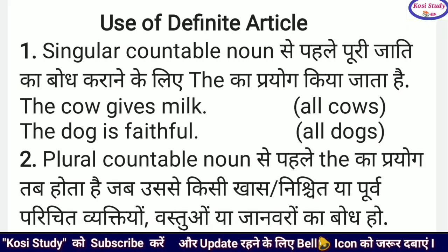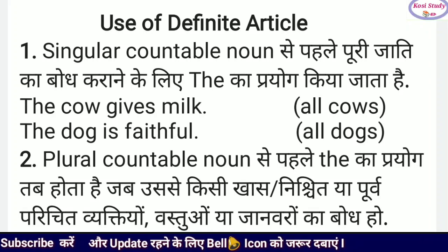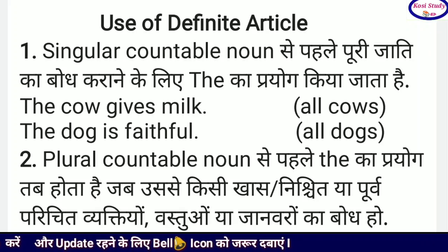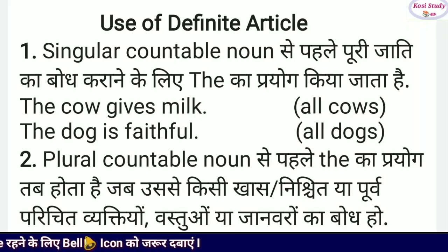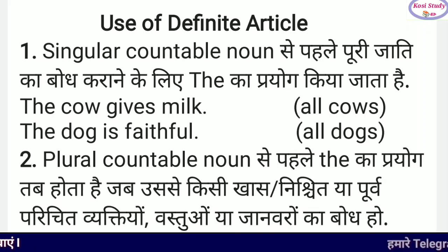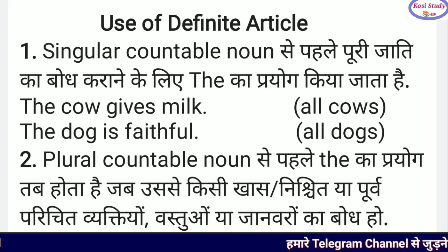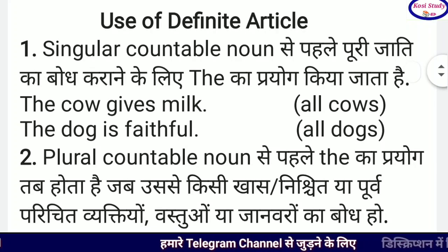यह article का third video है। पहले video में हमने जाना कि article होते क्या हैं, कितने प्रकार के होते हैं और उनका position क्या होता है — यानि किसी sentence में article का प्रयोग कहाँ किया जाता है: noun से पहले, adjective से पहले या adverbs से पहले। Second video में हमने सीखा कि article A और AN यानि indefinite article का प्रयोग कहाँ किया जाता है। यह third video है — इसमें हम जानेंगे कि definite article, it means 'the', का प्रयोग कहाँ-कहाँ किया जाता है।